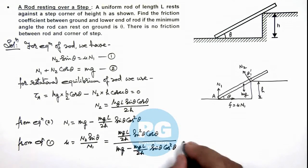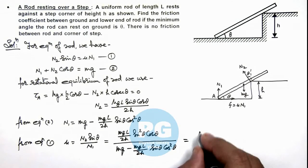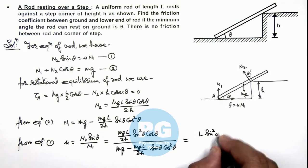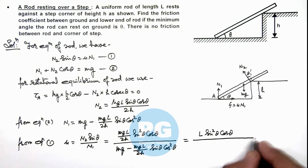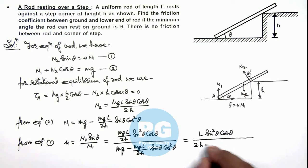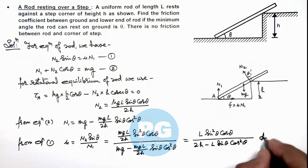So further simplifying this gives us L sine squared theta cos theta divided by twice of h minus L sine theta cos squared theta. That is the result of this problem.